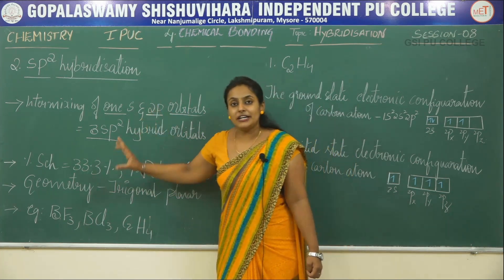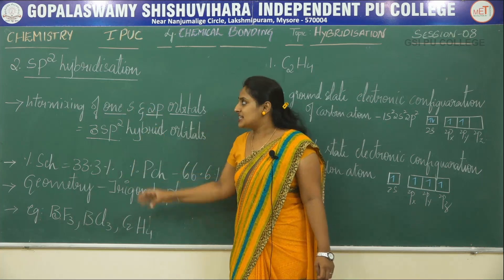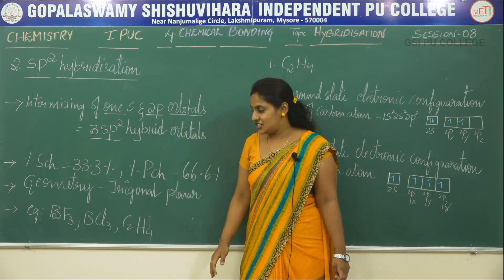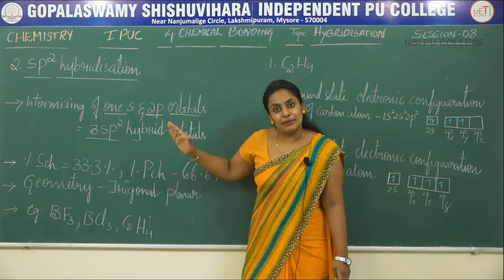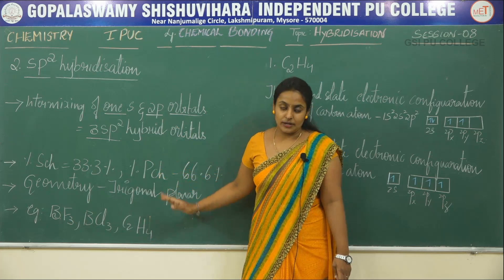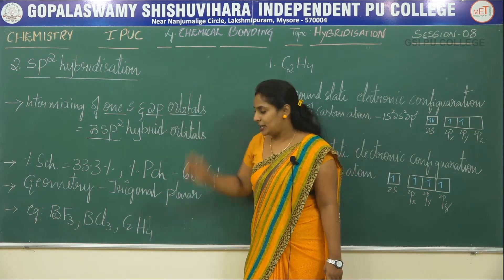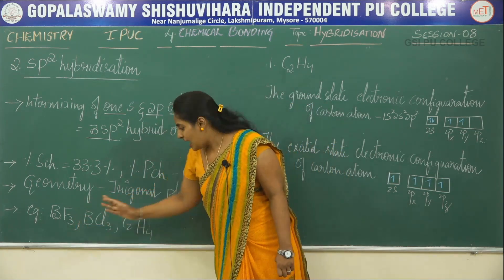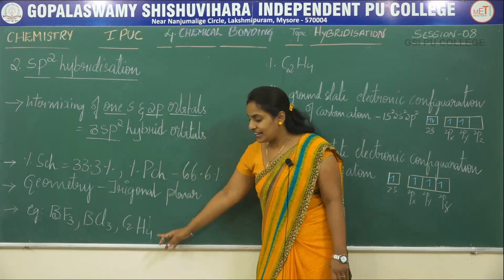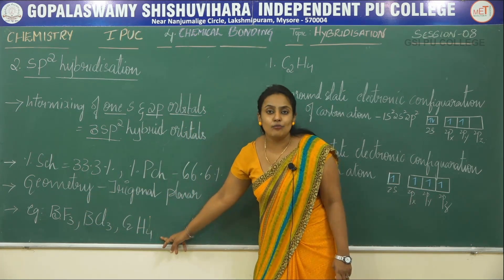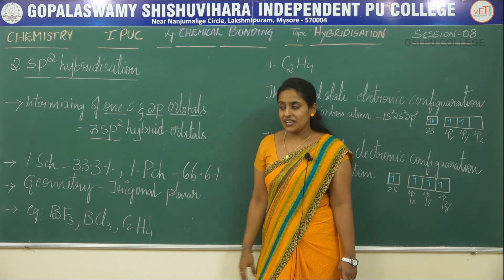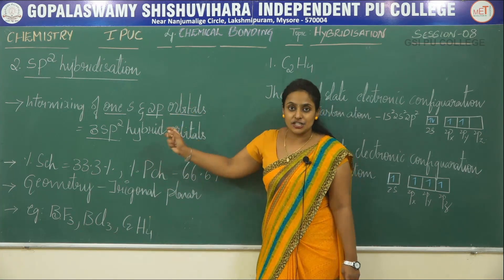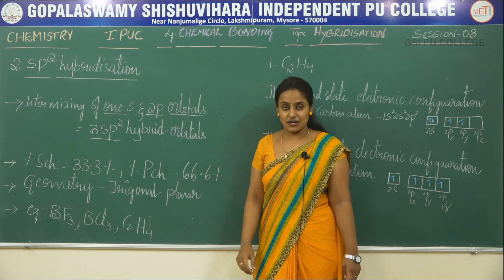The geometry of molecules possessing sp2 hybridization will be trigonal planar geometry. Some examples of such molecules are BF3, BCl3, and ethene (C2H4). This is the introduction to sp2 hybridization.